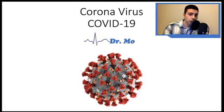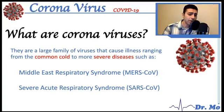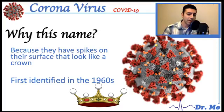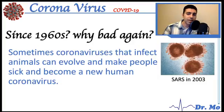So what are coronaviruses? They are a large family of viruses that cause illness ranging from the common cold to more severe diseases such as MERS and SARS — you may remember SARS from 2003 and how it killed so many people. They're called 'corona' because corona means a crown; they have spikes on their surface that look like a crown. These were first identified in the mid-1960s.